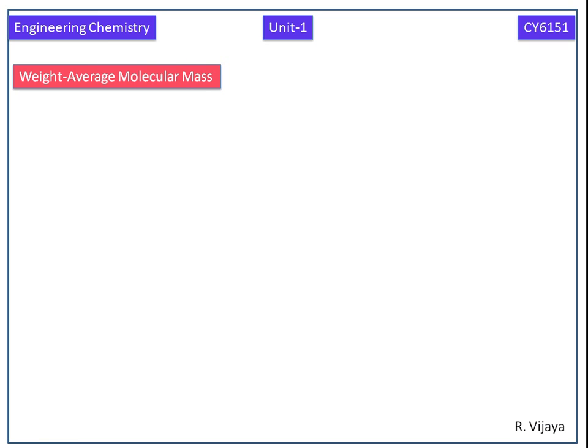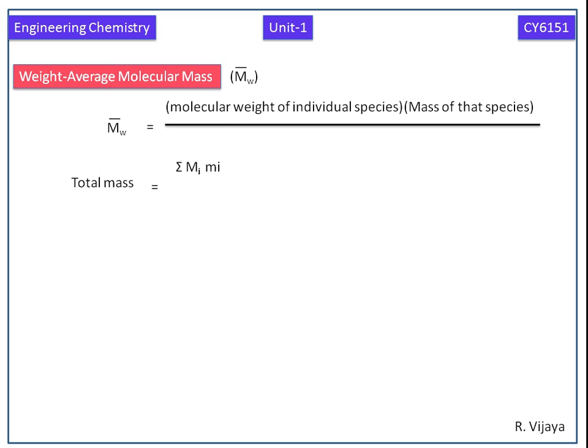Now we discuss weight average molecular mass. It is denoted by capital M bar W. It is defined as molecular weight of the individual species, that is capital MI, into mass of that species, that is small mI, whole divided by total mass of the molecules.